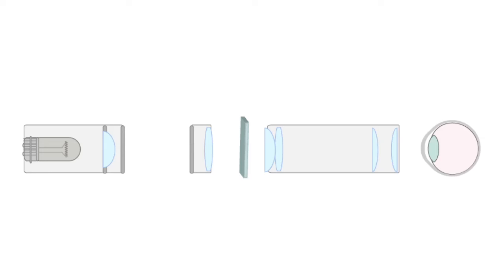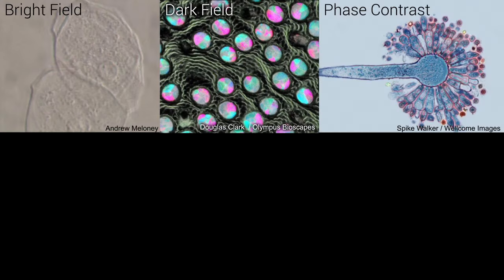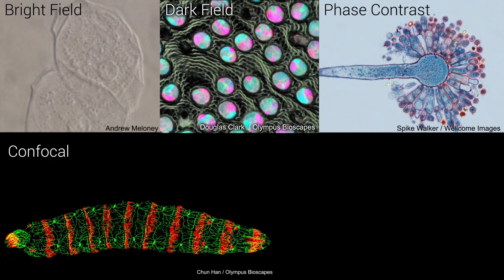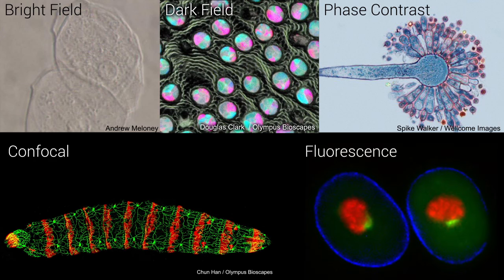In this animation, we will provide you with an overview of optical or light microscopy, in which light is focused through a lens or a series of lenses to magnify or enlarge a sample. There are several different types of light microscopy, including bright field, dark field, phase contrast, confocal, and fluorescence.